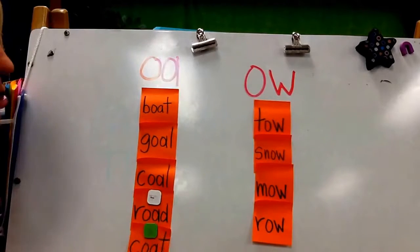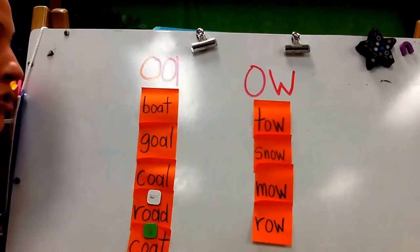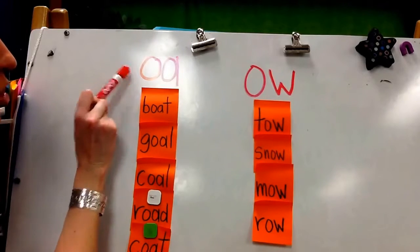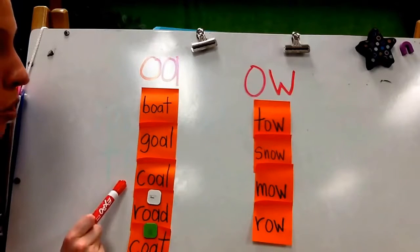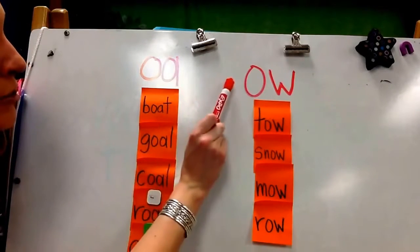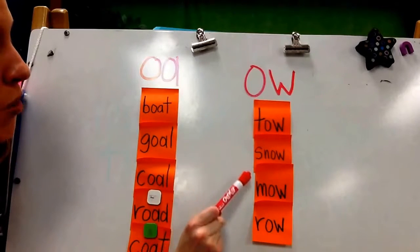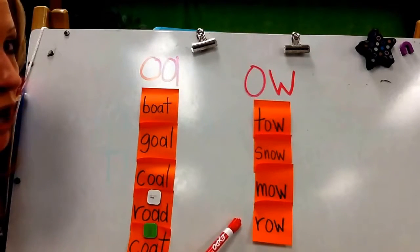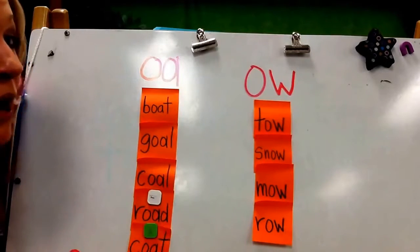When you're done, you need to find a partner to read your words to. Under OA, I have boat, goal, coal, road, and coat. Under OW, I have tow, snow, mow, and row. So when you see either OA or OW, I want you to read it as O.